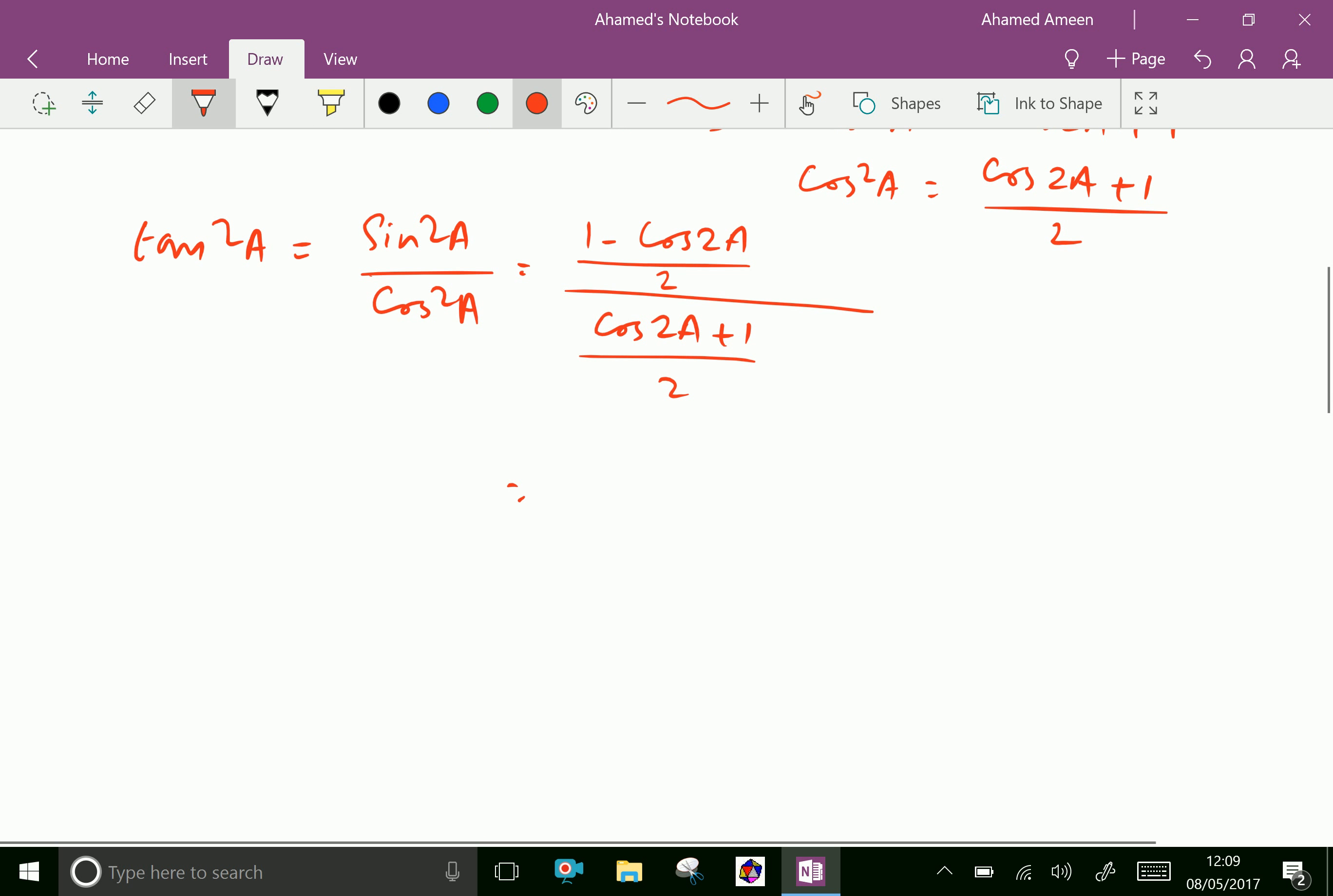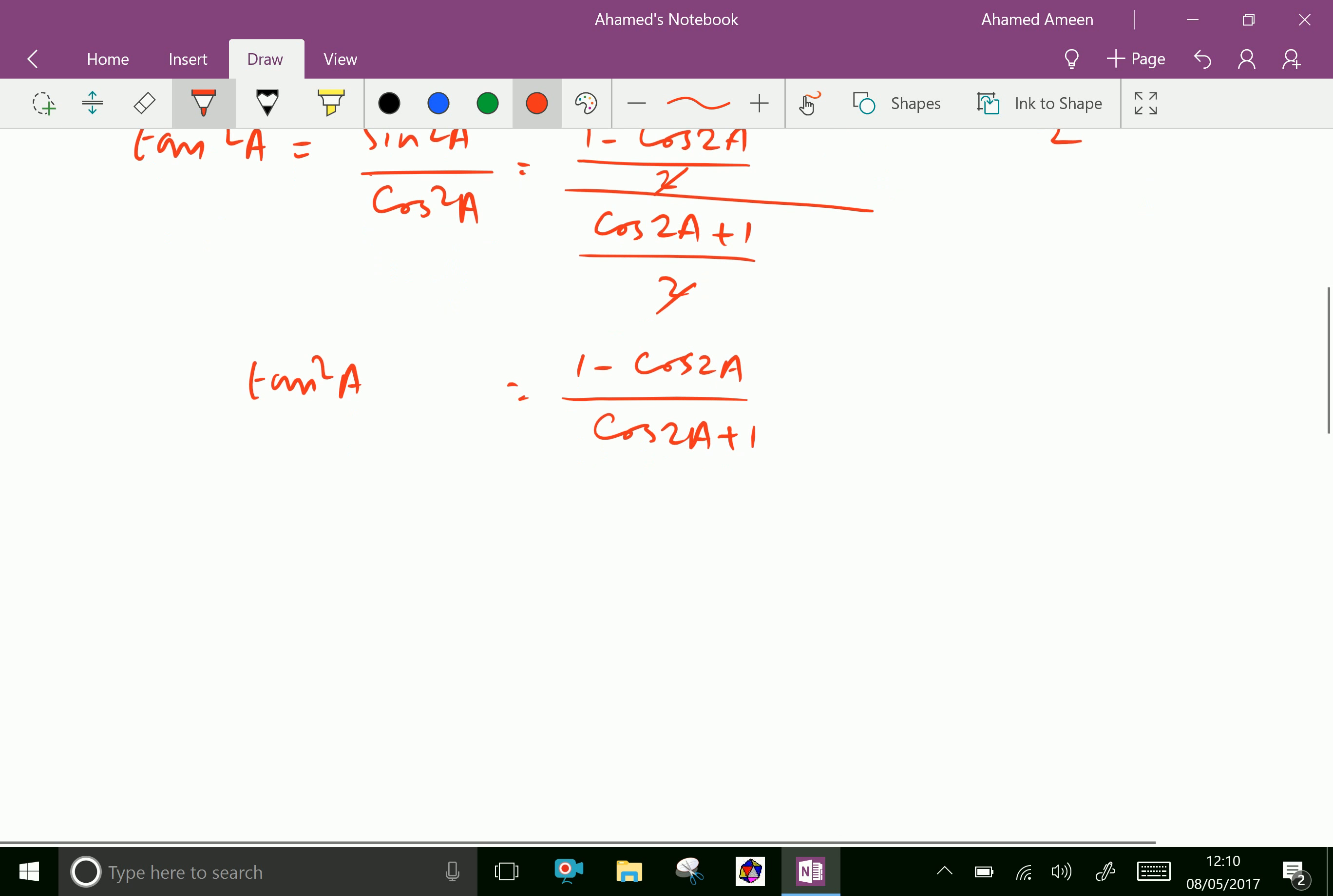The 2 and 2 cancel, then we can write 1 minus cos 2A over cos 2A plus 1, which equals tan squared A. Therefore tan squared A equals 1 minus cos 2A over 1 plus cos 2A, and we have proven it.